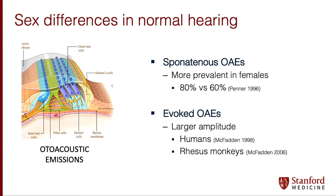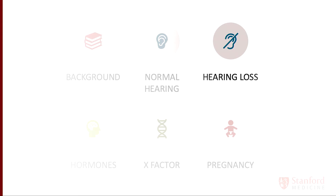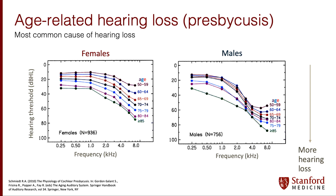What about cases of hearing loss? The quintessential example of sex differences in hearing loss — and the most common cause of hearing loss — is age-related hearing loss, or presbycusis. In cross-sectional study after study, men tend to have much more age-related hearing loss than women. As age increases, particularly in the higher frequencies, all of us lose sound acuity, but in males this is much more prevalent and much more severe than in females.